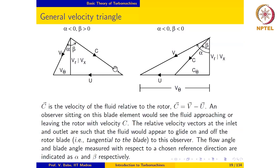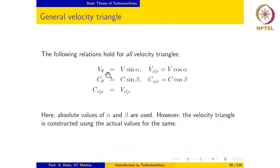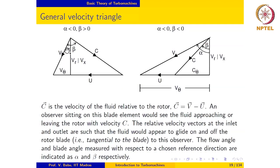We will use this sign convention when constructing velocity triangles. Velocity triangles are constructed taking into account whether alpha and beta are positive or negative, but once a triangle is constructed, other relationships may be determined using simple algebra. Irrespective of whether the velocity triangle looks like one form or the other, the following relationships hold: V_theta is always V times sine alpha, and V_x or V_r is always V cosine alpha. Similarly, C_theta is always C sine beta, and C_x or C_r is always C cosine beta.